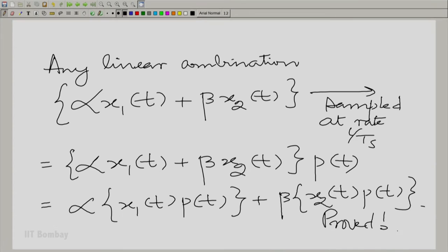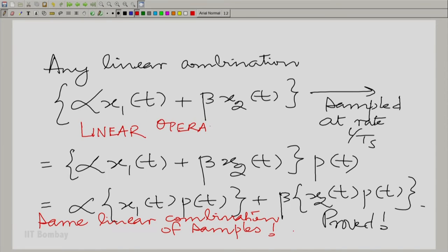What have we proved? We have proved that by sampling the linear combination, it is equivalent to the same linear combination of the samples. So, therefore, a linear operation. Sampling is a linear operation.